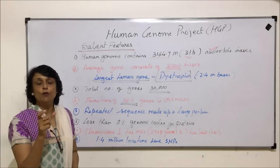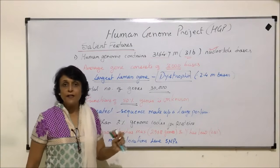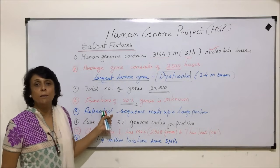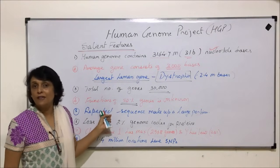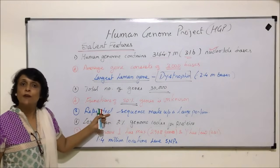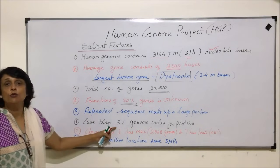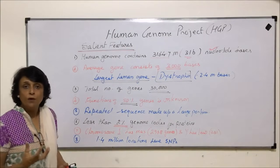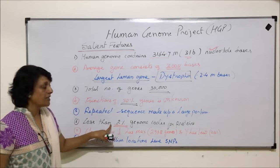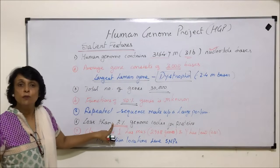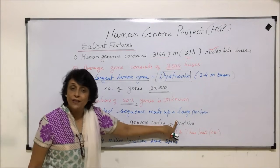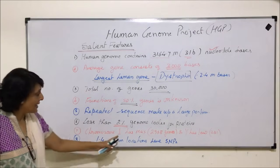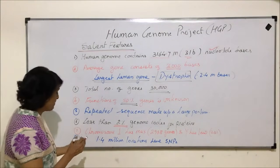Repeated sequences make a large portion of our genome — nucleotide sequences repeated different numbers of times in different individuals. These sequences form the unique identification of every individual, which we will discuss under DNA fingerprinting. Less than 2 percent of the genome codes for proteins — of the entire DNA on our 23 chromosomes, only 2 percent codes for proteins.